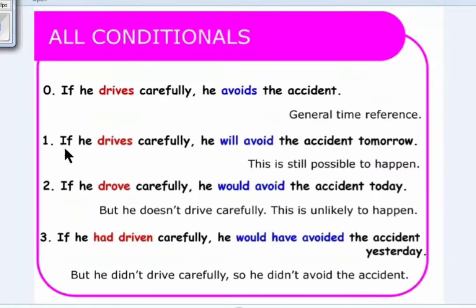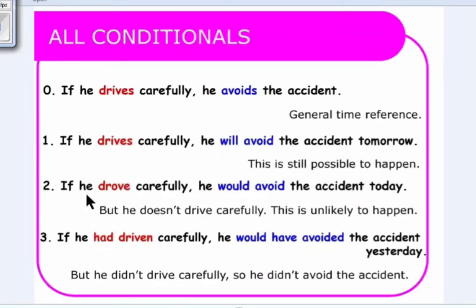In the first conditional, the verb next to 'if' is in the present simple tense, and the result clause uses 'will' plus the bare infinitive. We can reverse the sentence: 'He will avoid the accident tomorrow if he drives carefully.' In the second conditional, we have past simple tense after 'if' and 'would' plus the bare infinitive in the result. Reversed: 'He would avoid the accident today if he drove carefully.'